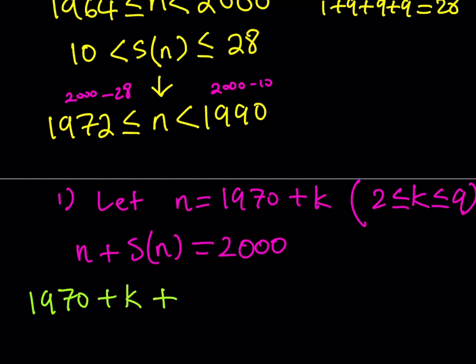How about S(n)? Well, if this is my number, then obviously k is less than or equal to 9, so it's kind of like a digit. The sum of the digits of this number, 1970 plus k, is going to be 1 plus 9 plus 7 plus 0 plus k, which is basically 17 plus k. So this is the n plus S(n) sum, and this needs to equal 2000.